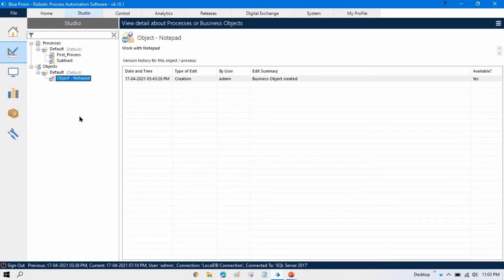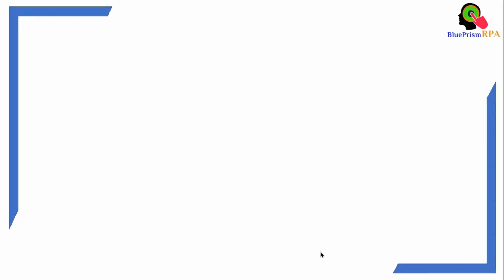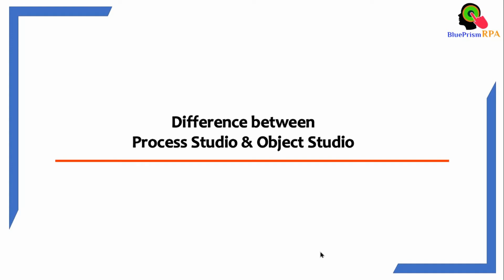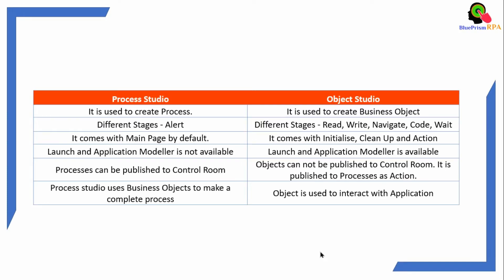In the previous video we talked about what is Object Studio and how to create a simple object. Now in this video we will talk about the difference between Process Studio and Object Studio. Process Studio is used to create a process and Object Studio is used to create a business object.